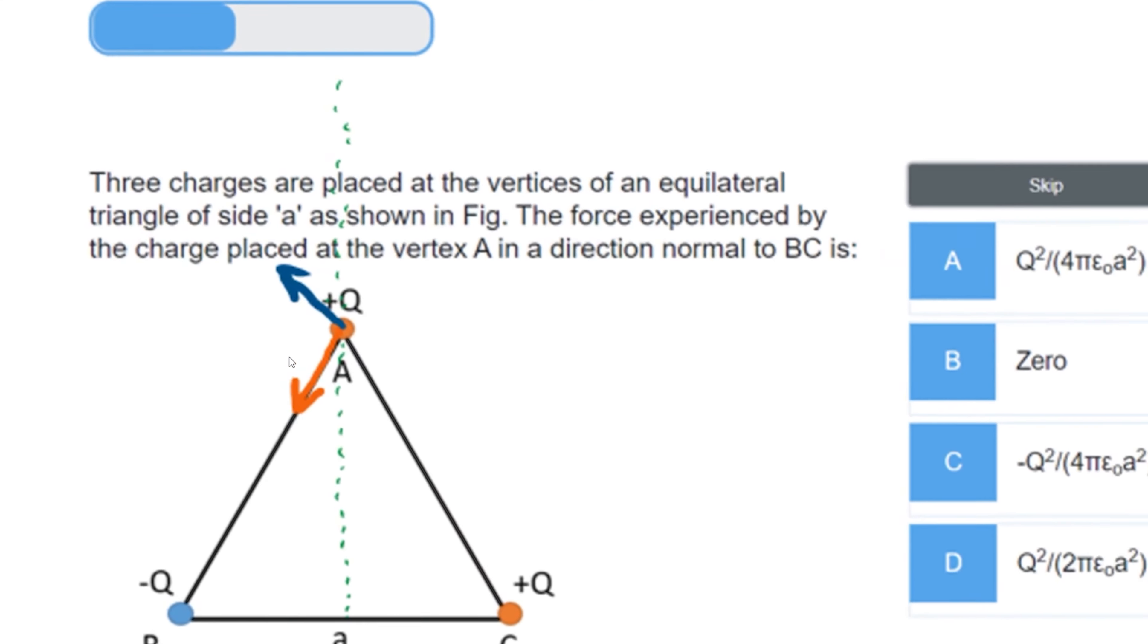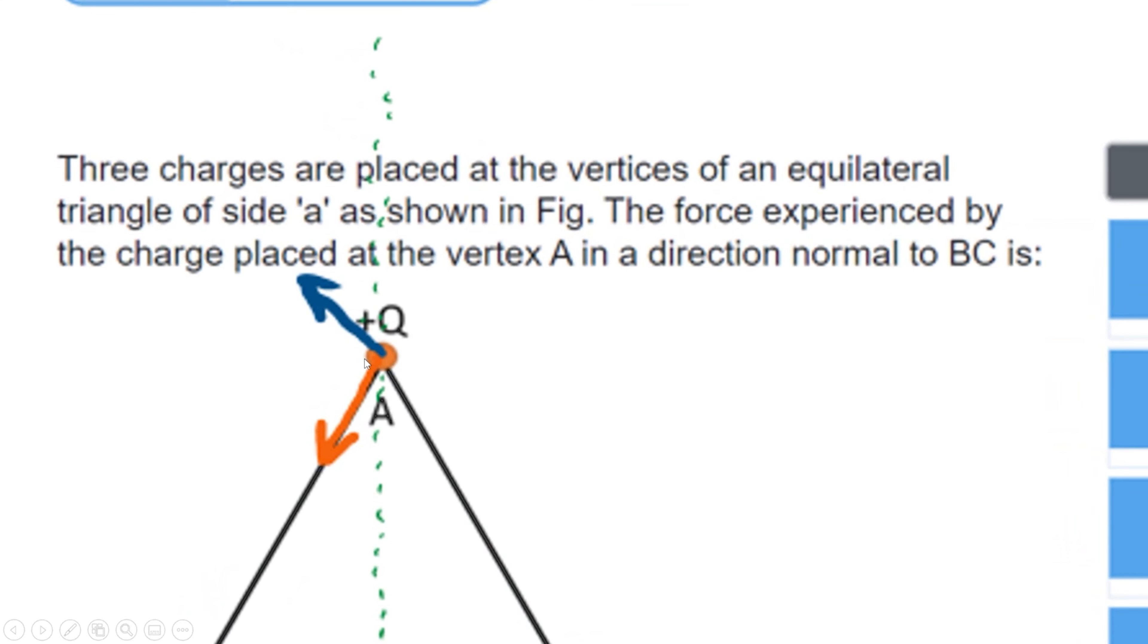Let's see the components of the two forces. If we draw the components, we will know the x-axis. This is our x-axis. The two angles are 60-60. This angle is 60 and this angle is 60.